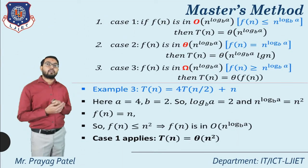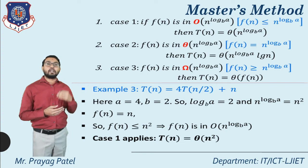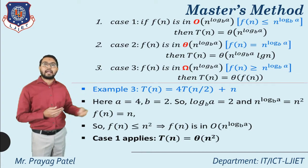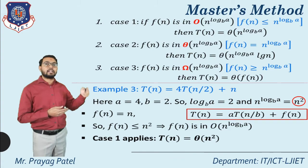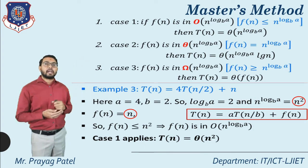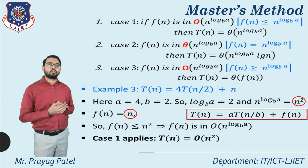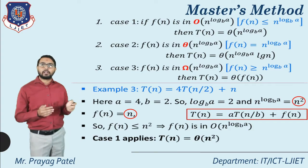Variation example 3: T(n) = 4T(n/2) + n. Here a = 4, b = 2. Find n^(log a base b) = n^(log 4 base 2) = n². f(n) = n. Comparing: n^(log a base b) = n² and f(n) = n. Since f(n) ≤ n², case 1 applies: T(n) = Θ(n^(log a base b)) = Θ(n²).